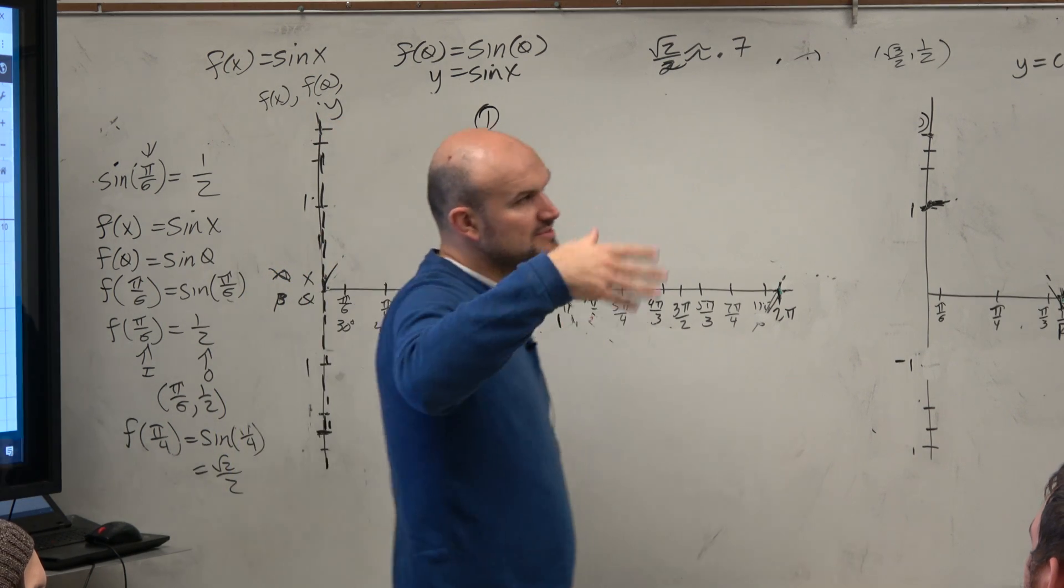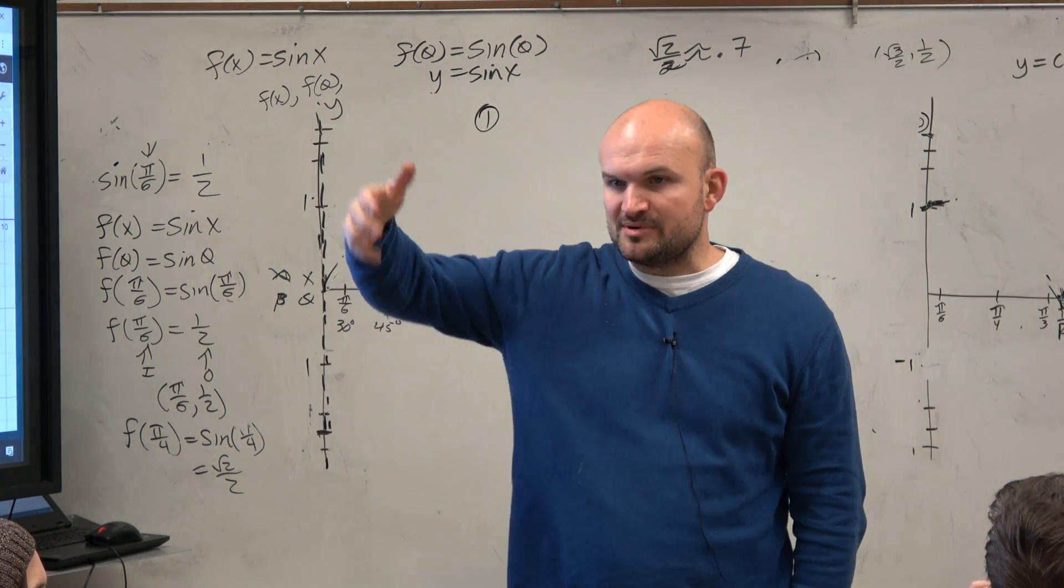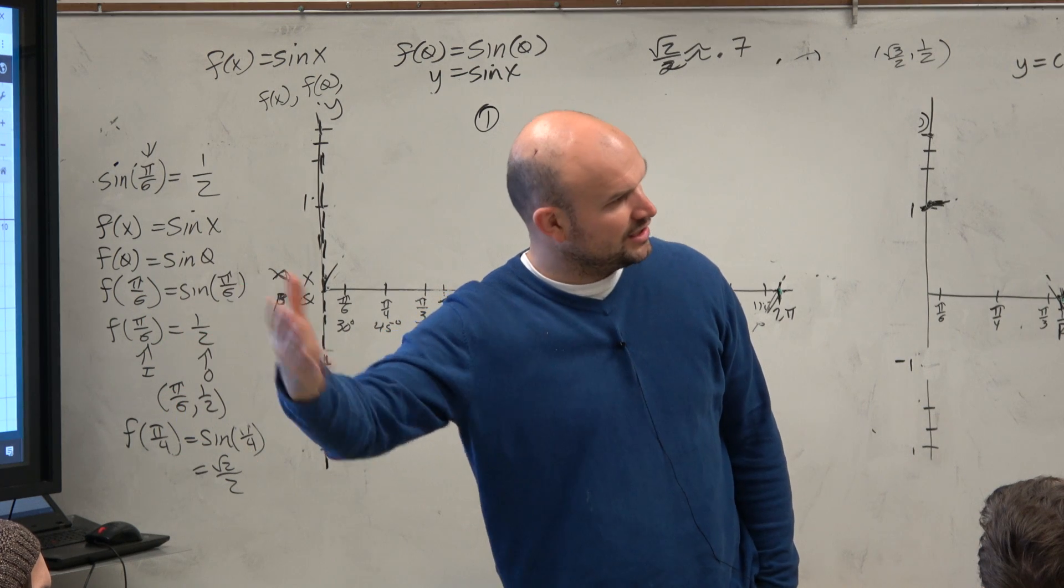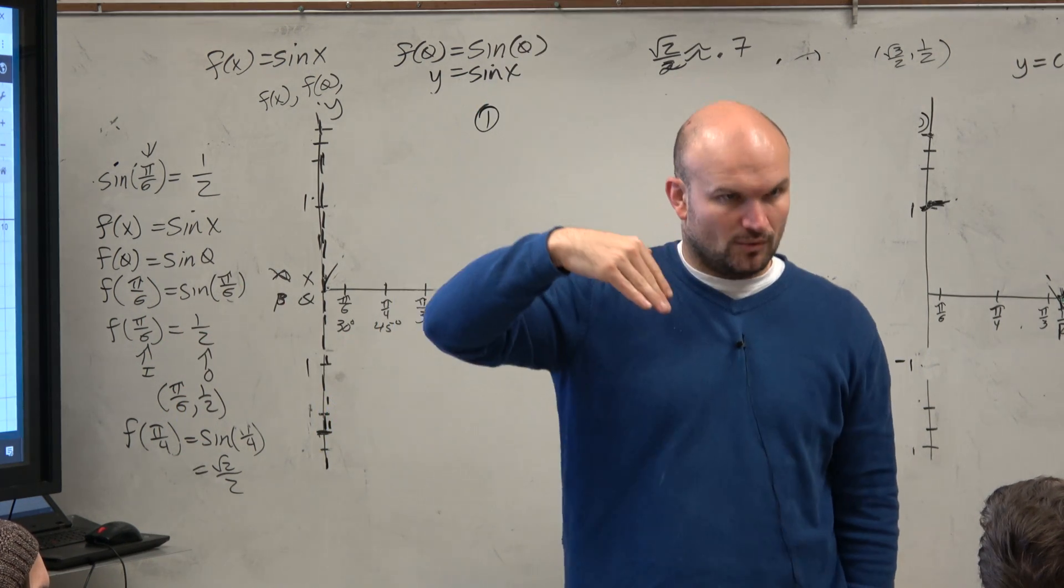Now, when we started talking about the unit circle, we said the sine represented the y-coordinate. Well, then the cosecant was 1 over the y-coordinate.